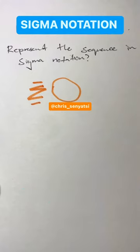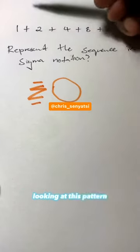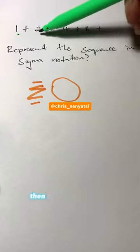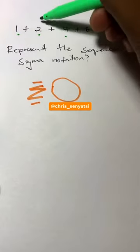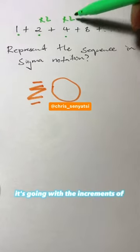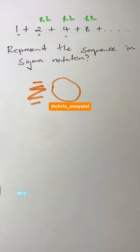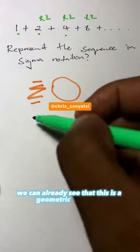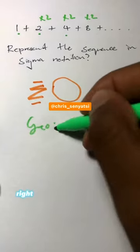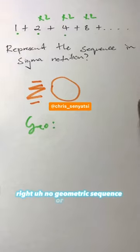Looking at this pattern, we see it starts from 1, then goes to 2, goes to 4 - it's going with the increment of times 2, times 2, times 2. We can already see that this is a geometric sequence or series.